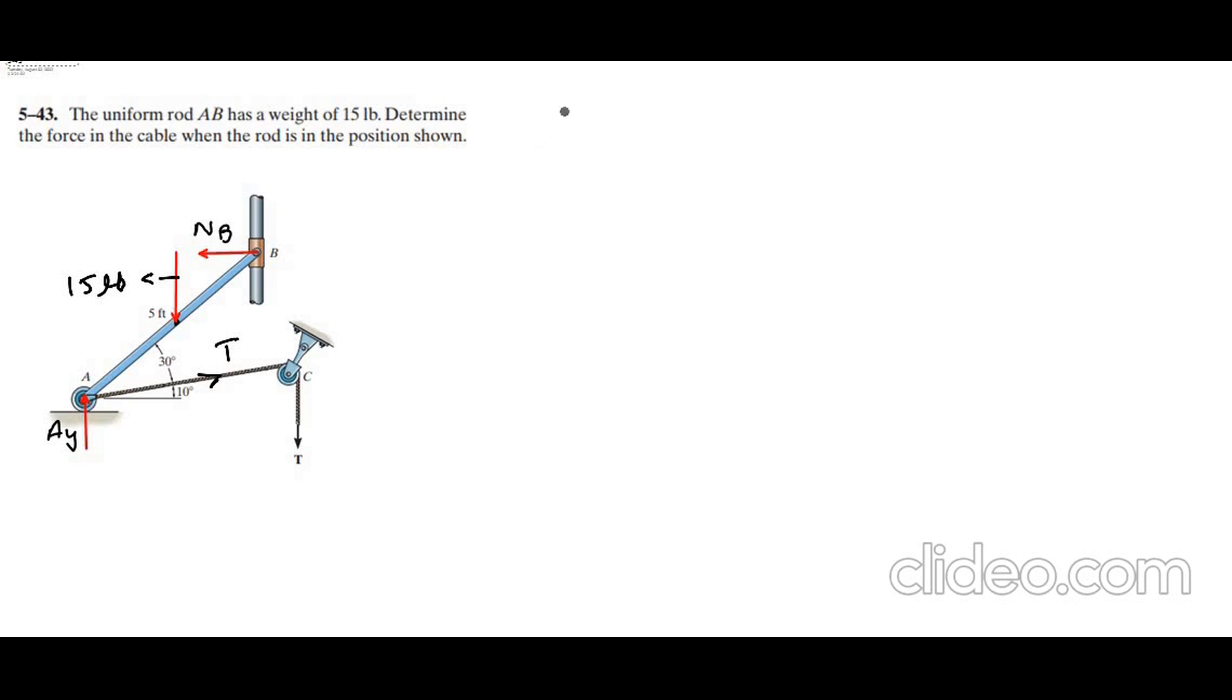So our first equation for the equilibrium is sum of the forces in x direction equals to 0. I am considering right hand side as positive. So I have T cos 10 degrees, the horizontal component of this tension T, minus NB equals to 0. Let's call this equation 1.